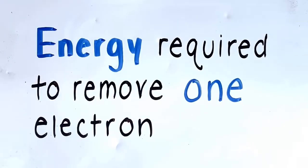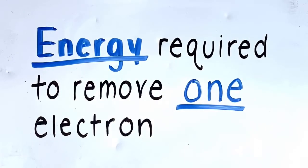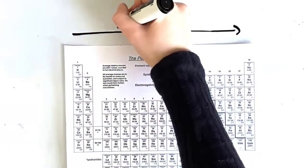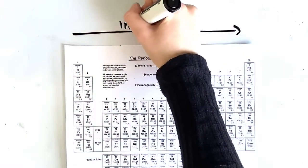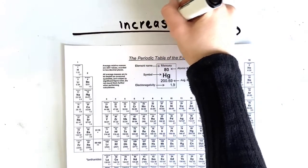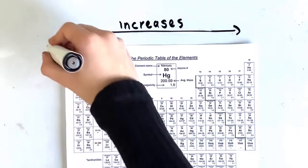Our fifth periodic table trend is first ionization energy. This is a measure of the energy required to remove one electron from the valence shell of a neutral atom. When you move across a period, the ionization energy increases. This is because moving across a period, the number of protons and electrons being added to the atom increases, making the nuclear charge increase, which results in a stronger attraction from the nucleus on the electrons.